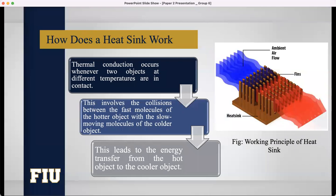Here, I have attached a picture which depicted the working principle of a heat sink. In conclusion, we can summarize that for heat sink, thermal conduction occurs whenever two objects at different temperatures are in contact. Then, this involves the collisions between the fast molecules of the hotter object with the slow-moving molecules of the colder object. This leads to the energy transfer from the hot object to the cooler object.